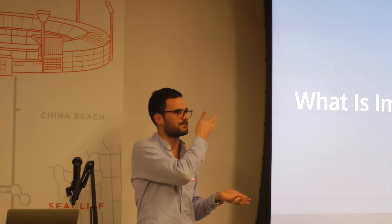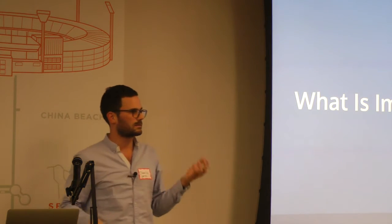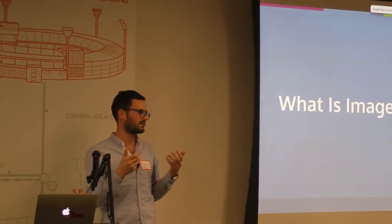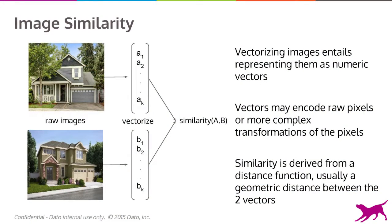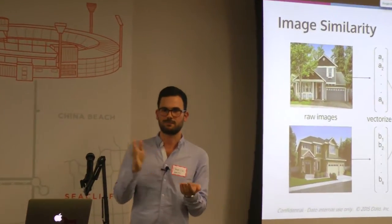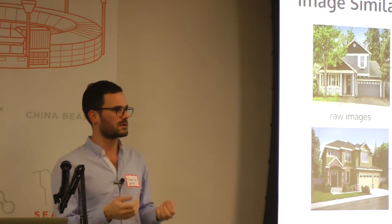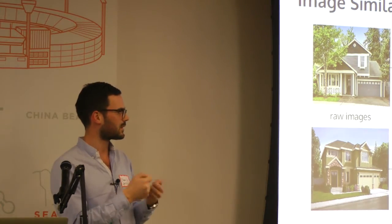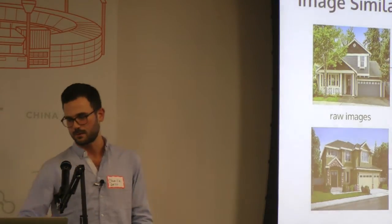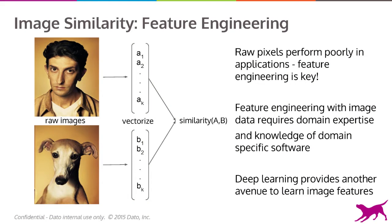All of these applications start with a higher-level question: how do I compare similar images? When we talk about similar images, we usually take an image and represent it as a numeric vector. That vector could be simple pixels — a pixel is an RGB float from 0 to 255 — or it could be a more complex transformation of those pixels. You take two images, pick a distance function, and measure similarity. The problem is raw pixels tend to perform very badly and can be quite misleading.